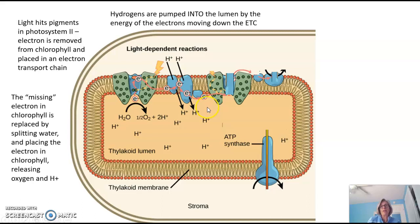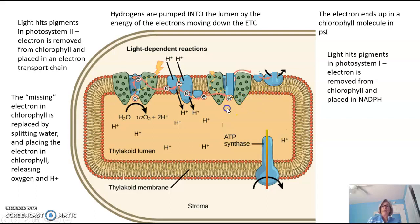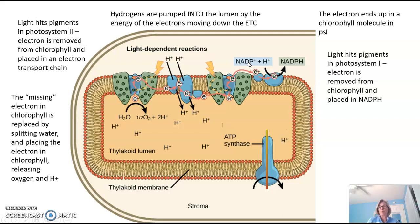The electron keeps moving down its electron transport chain and ultimately ends up back into a chlorophyll in another photosystem. This photosystem is then also hit with light, which excites the photosynthetic pigments and takes that electron from chlorophyll again, putting it up into an electron acceptor. This time the electron is not going to go into another electron transport chain, but is placed on a molecule capable of giving it to an electron holder called NADP+. NADP+ is very similar to NAD+, which you are familiar with from the mitochondria — it simply has an extra phosphate. It is a molecule capable of accepting and holding two electrons. When NADP+ picks up two electrons, it becomes NADPH.